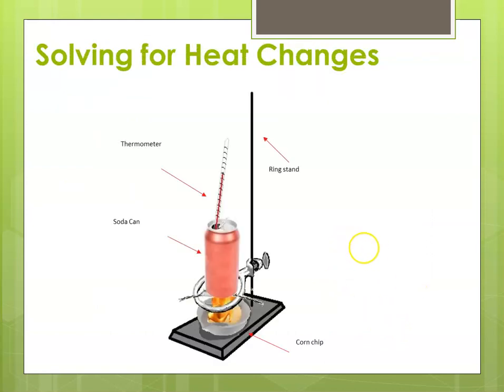So when we're solving for heat changes, and as I said, this particular setup is for a corn chip, in lab we usually do corn chips, popcorn, we'll do potato chips, we'll do crackers, whatever we can have on hand. And again, we burn the food under a soda can that has a measured amount of water in it, and we monitor the temperature.